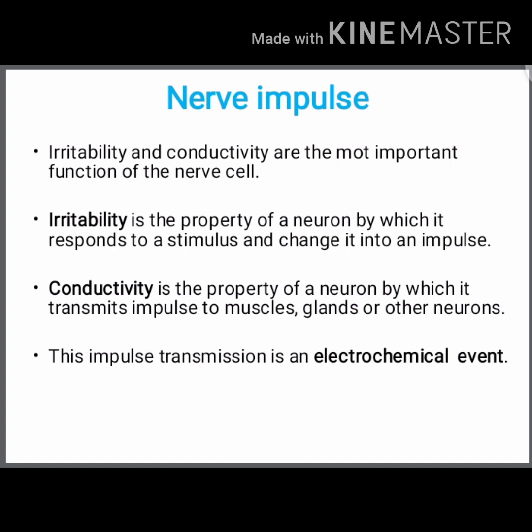Nerve impulses are signals transmitted along nerve fibers. Irritability and conductivity are the most important functions of nervous cells. Irritability is the property of a neuron by which it responds to a stimulus and converts it into an impulse. Conductivity is the property of a neuron by which it transmits impulses to muscles, glands, or other neurons. This transmission of impulses is called an electrochemical event.